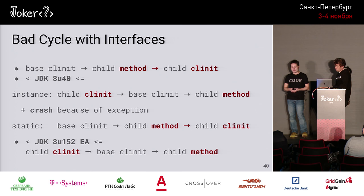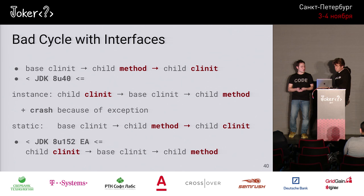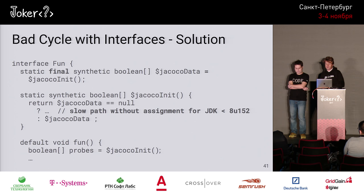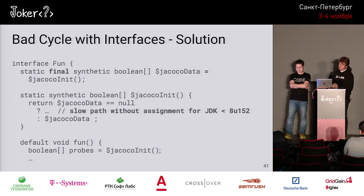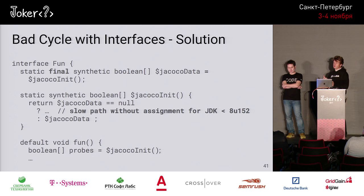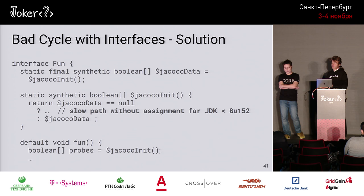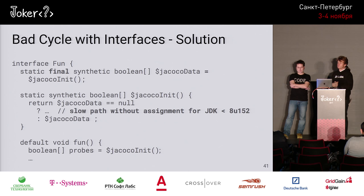Unfortunately, since buggy JDK versions already shipped, we need a solution. In JaCoCo, for interfaces, the $jacocoInit method checks every time: if we're in a bad cycle and the array isn't initialized yet, we take the slow path and request the boolean array from the runtime directly. We hope this doesn't happen often, but as long as we're in the bad cycle we still handle it safely.